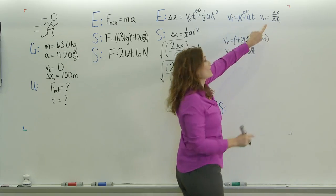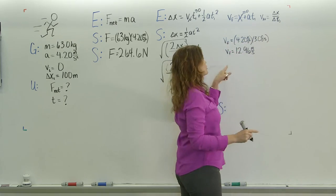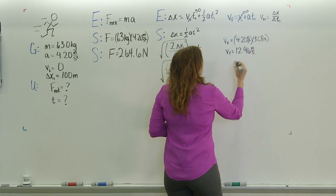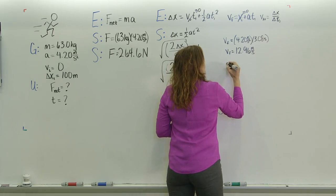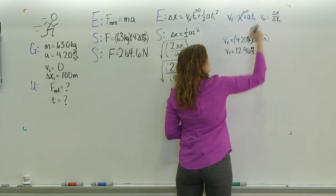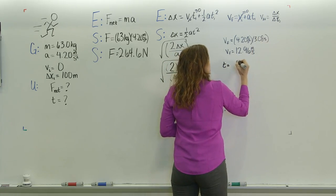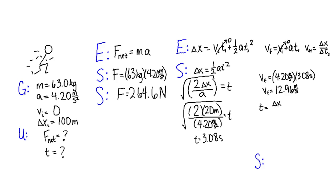So, use our average velocity equation. That time, if you switch these, you get time is equal to delta x divided by velocity average.